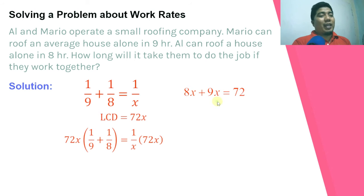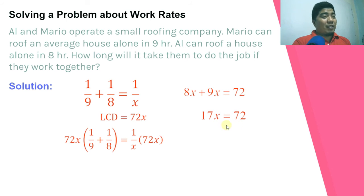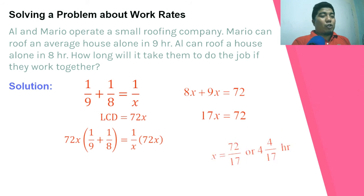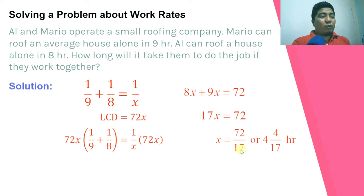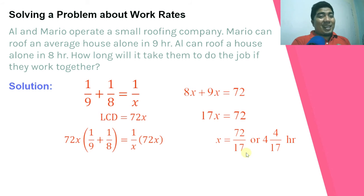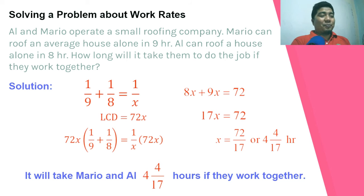Adding 8x plus 9x gives 17x equals 72. Dividing both sides by 17, x equals 72 over 17, which as a mixed number is 4 and 4 over 17 hours. Therefore, it will take Mario and Al 4 and 4/17 hours working together — less than either one working alone.